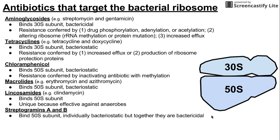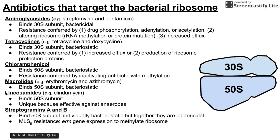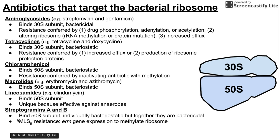A shared resistance mechanism for the macrolides, lincosamides, and streptogramins is called MLSB resistance — standing for Macrolide, Lincosamide, and Streptogramin B. A gene called the erm gene can be induced, coding for a protein that methylates the ribosome. This methylation prevents the mechanism of action of macrolides, lincosamides, and streptogramin B, rendering those antibiotic classes inactive.